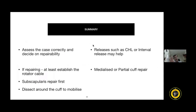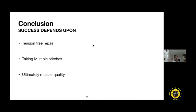To summarize the overview of massive cuff tears: assess the case correctly and decide on repairability. If repairable, try to do a complete repair — that is the best you can do. If complete repair is not possible, at least establish the rotator cable and subscapular mechanism first, then dissect around the cuff to mobilize. Releases such as CHL release or interval release may help in selective cases, or at minimum do a medialized or partial cuff repair. The success of massive cuff tear repair depends on achieving a tension-free repair with multiple stitches, but ultimately what dictates success is muscle quality — not the surgical technique alone. Irreparable cuff is a totally different entity not covered in this talk, which focused on massive cuff tear repair techniques.